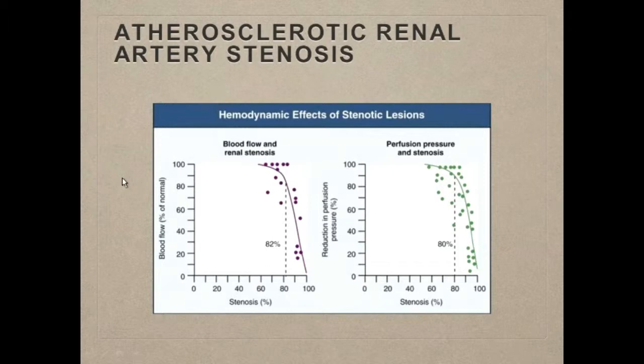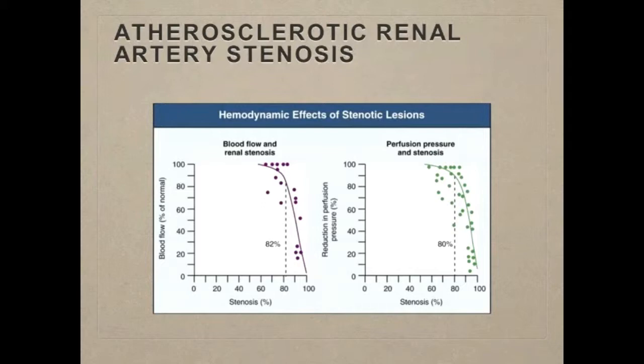It is not until about 80% stenosis of a renal artery that you start seeing ischemic changes with fibrosis within the kidney and the actual effects of chronic kidney disease from the disease. Looking at the graph here, blood flow is not affected until stenosis is about 82%, and perfusion pressure is not affected until about 80%. So it's a pretty significant amount of stenosis that patients have to have before you start seeing a decline in their renal function and urine output.